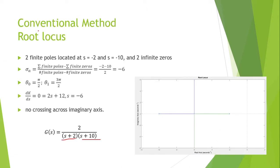First, we use the conventional method. So we have to find the root locus. From this transfer function, we have two finite poles which are located at negative 2 and negative 10, and two infinite zeros.